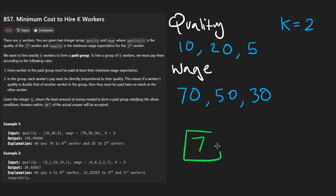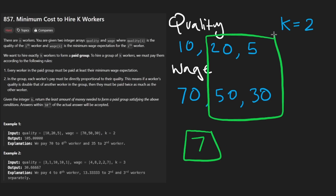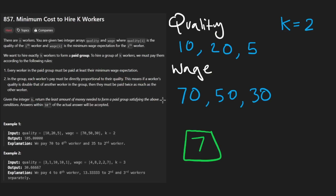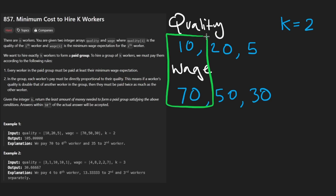Because suppose the rate happens to be seven — once we have that, it's pretty trivial to calculate. Like if we had these two workers, it's easy for us to calculate the total amount of money we'd spend, which is what we're required to do. For example, in the first example that we had...